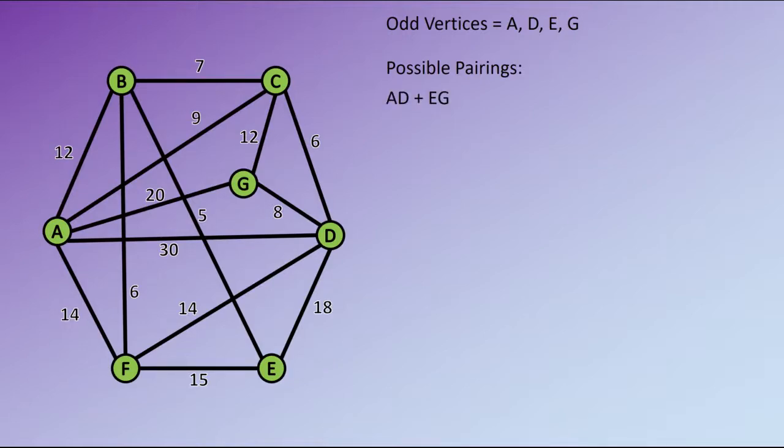We can put A with D and E with G. We can put A with E and D with G. Or we can put A with G and D with E. These are the only pairings that are possible.